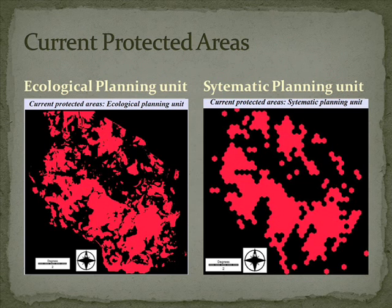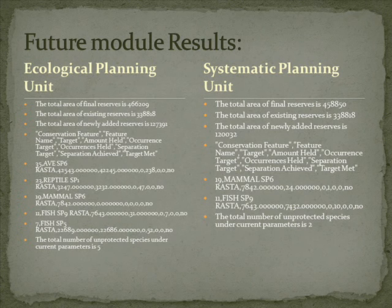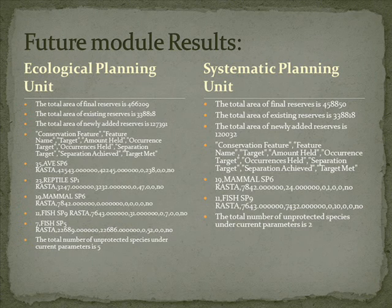The central regions are not protected for both maps. The future model results indicate a decreased total area of final reserve for both planning units when compared to the current units. Both planning units have 338,818 kilometers squared as the total area of existing results. The conservation targets are not met for five species in the ecological planning units, two of which are the same as before, with an added bird species and a fish named Astatoreochromis vanderhorsti.